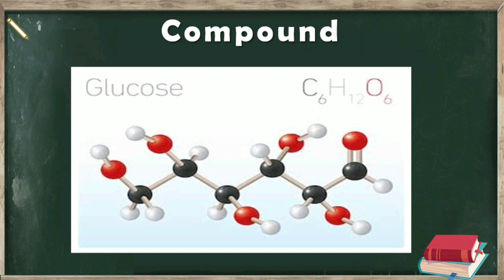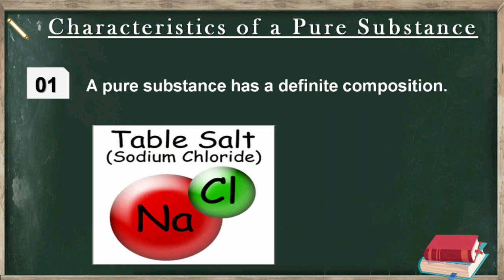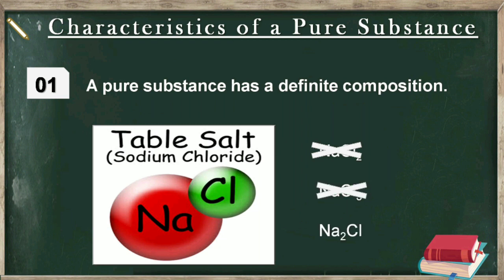Now let us study some common characteristics shown by pure substances. Number one is that a pure substance has a definite composition. For example, a molecule of salt always consists of one atom of sodium and one atom of chlorine. It never happens that a molecule of salt has a different number of sodium and chlorine atoms. We can never have common salt with a formula like NaCl₂ or NaCl₃, etc.